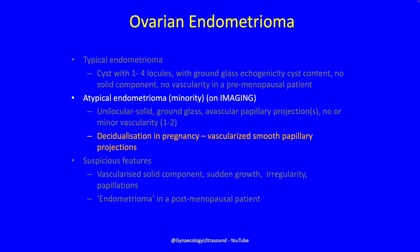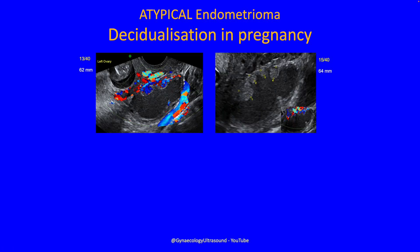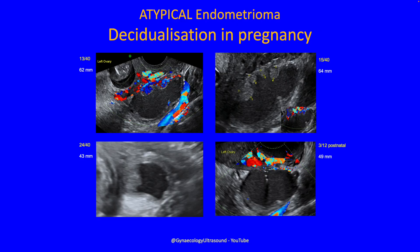The second kind of atypical endometrioma is decidualisation in pregnancy, described as vascularised smooth papillary projections. This patient at 13 weeks gestation had a unilocular solid cyst with strongly vascular papillae. At 15 weeks they had enlarged and become more vascular. At 24 weeks the papillations had all but vanished. At 3 months postnatal it was clearly an endometrioma with the papillations gone, and cystectomy confirmed a benign ovarian endometrioma.